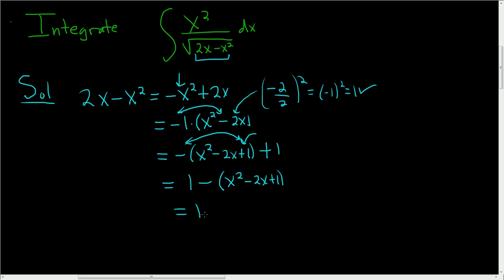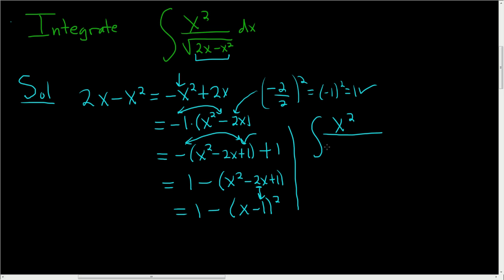This simplifies to 1 minus (x minus 1) squared. How do you get the negative 1? You just take the negative 2 and divide by 2. So now let's rewrite what we have: the integral of x squared all divided by the square root of 1 minus (x minus 1) squared, dx.